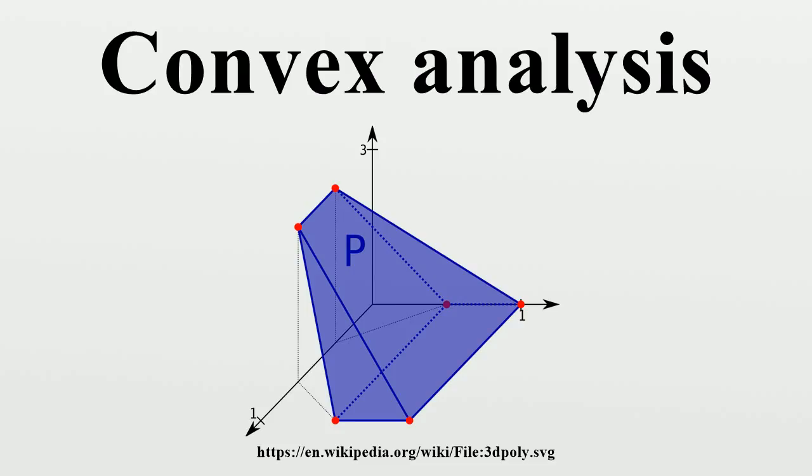The bi-conjugate is useful for showing when strong or weak duality holds. For any X∈X, the inequality f**≤f follows from the Fenchel-Young inequality.